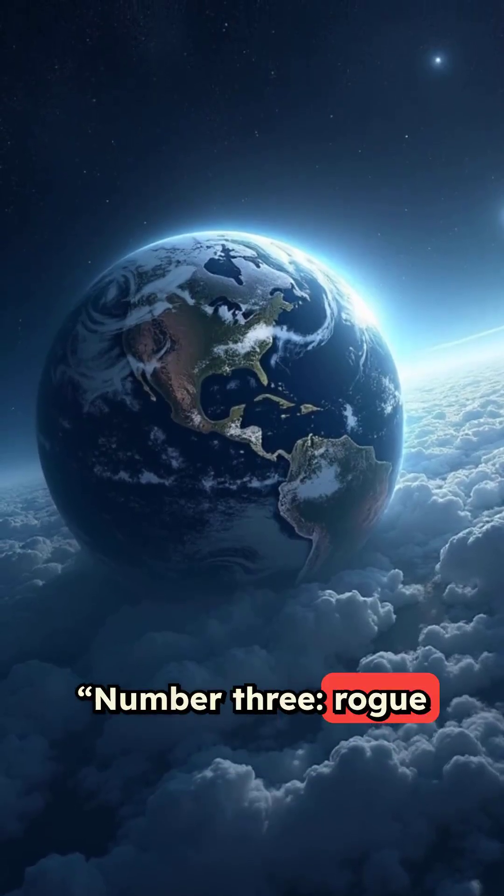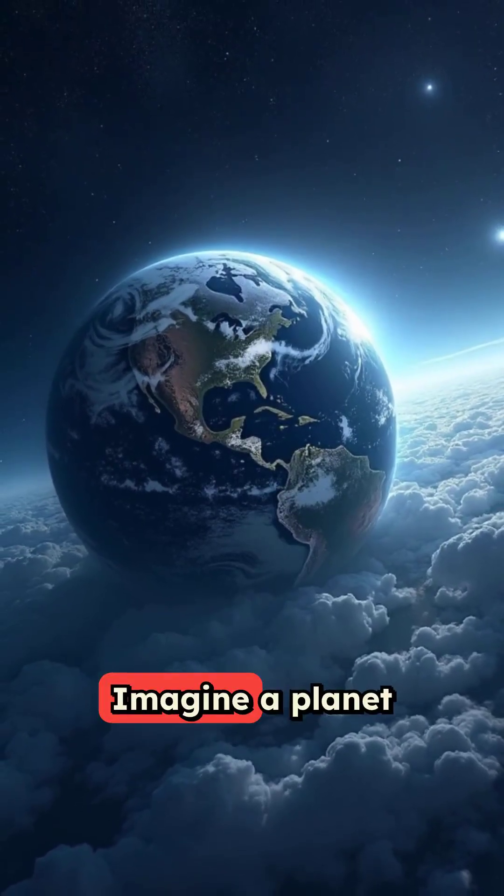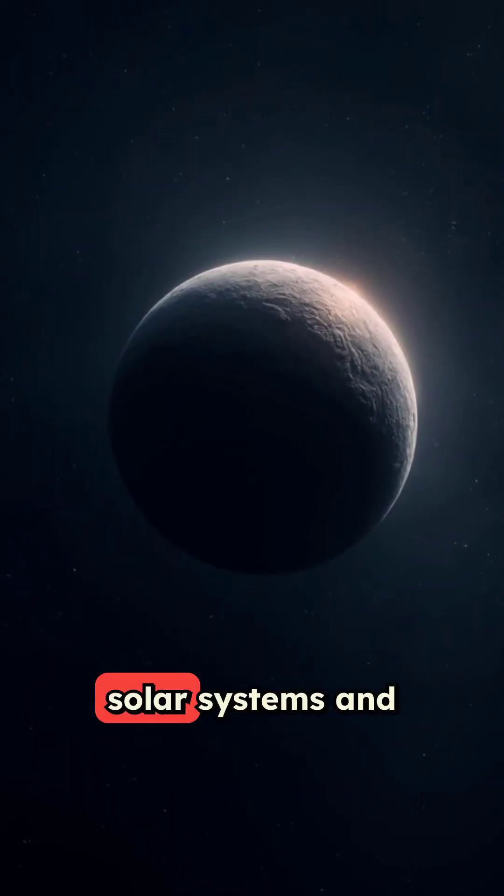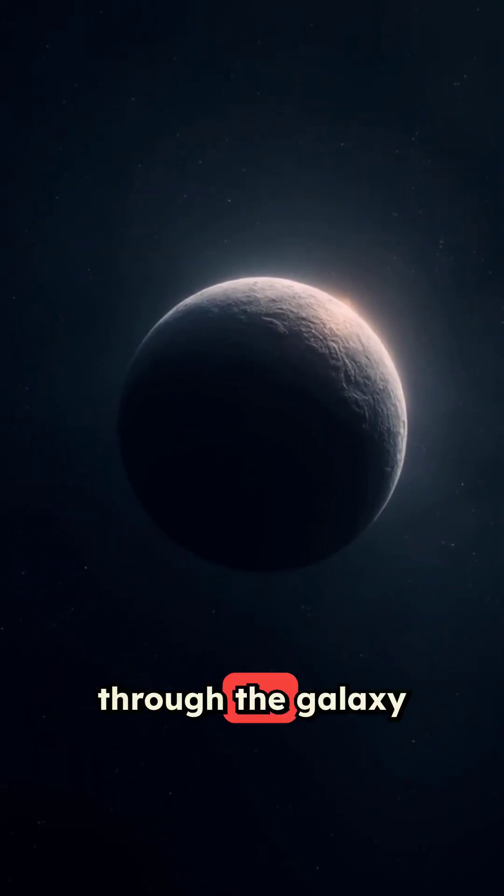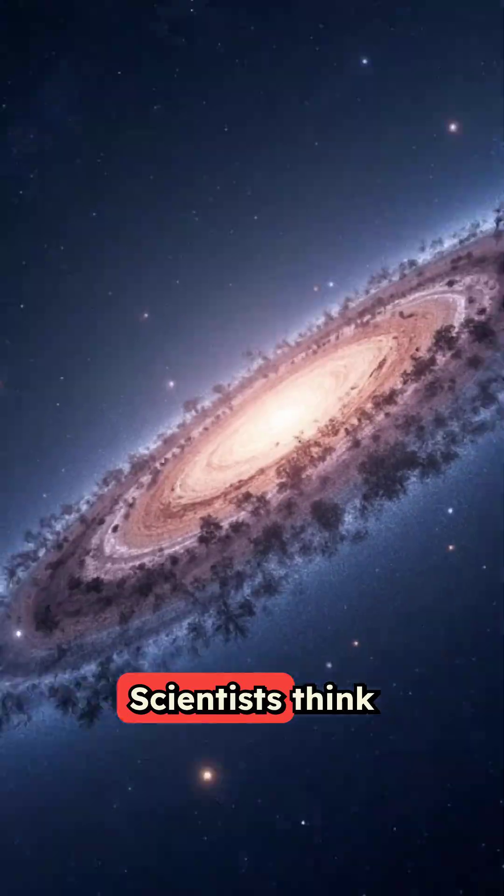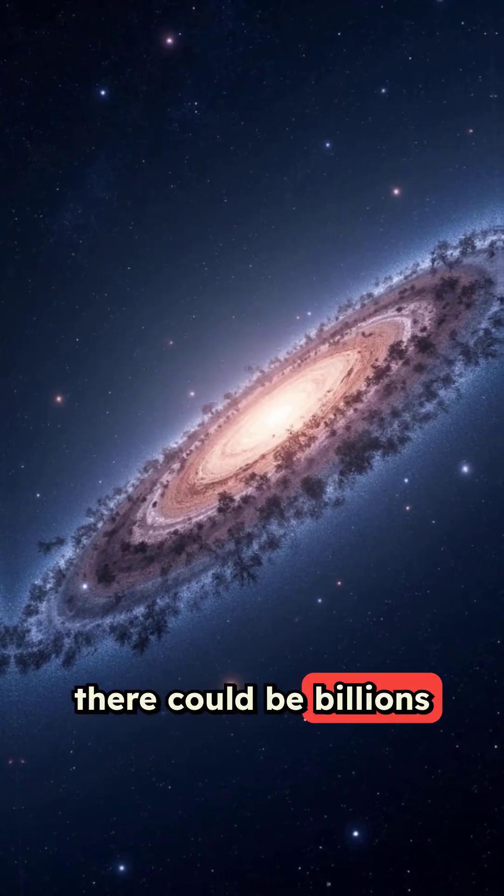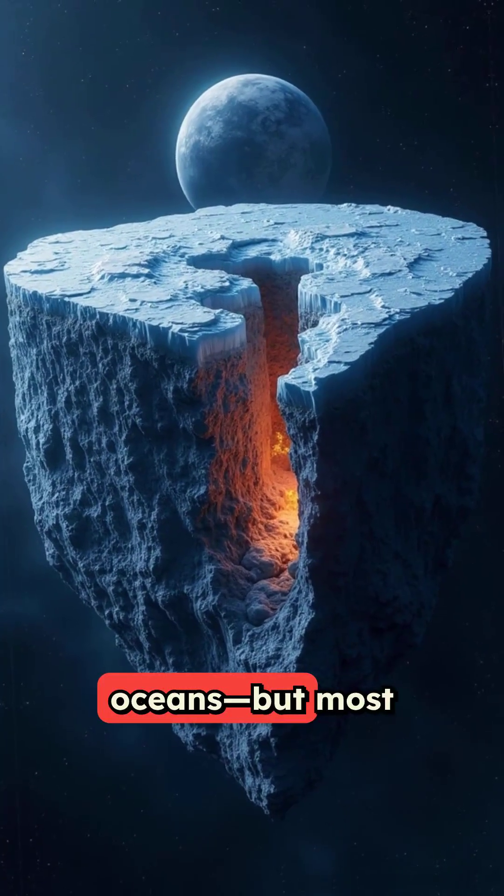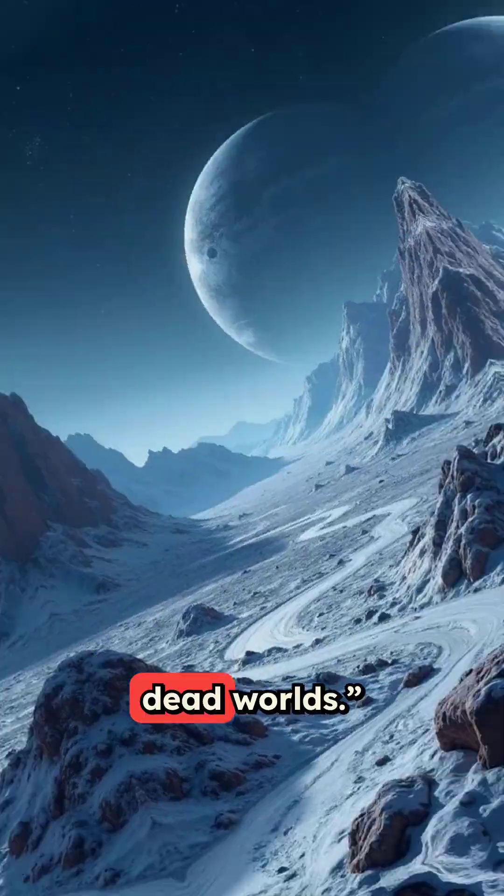Number three, rogue planets. Imagine a planet just like Earth, but with no sun. These worlds were kicked out of their solar systems and now drift alone through the galaxy in eternal darkness. Scientists think there could be billions of them in the Milky Way alone. Some might even have underground oceans, but most are just frozen, dead worlds.